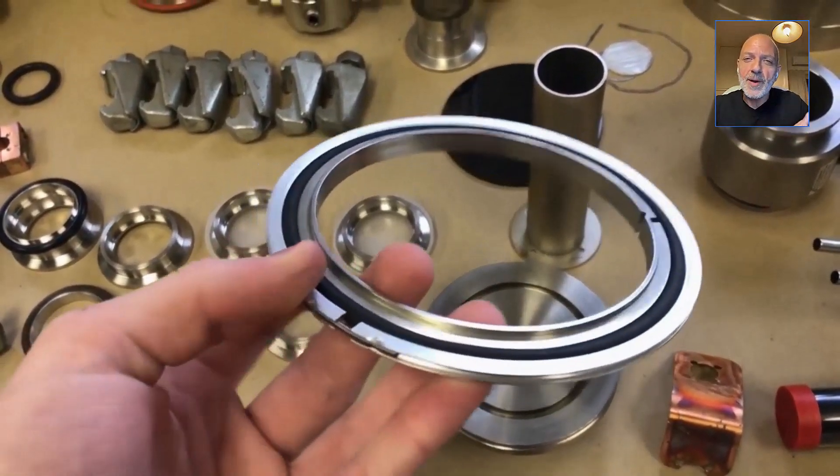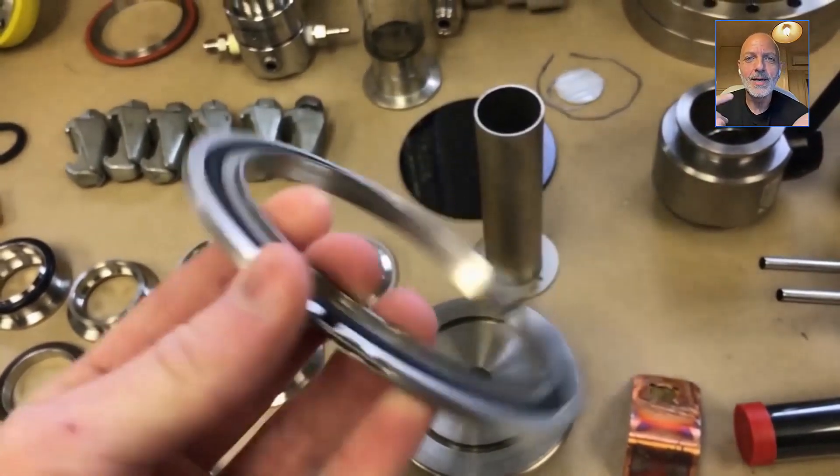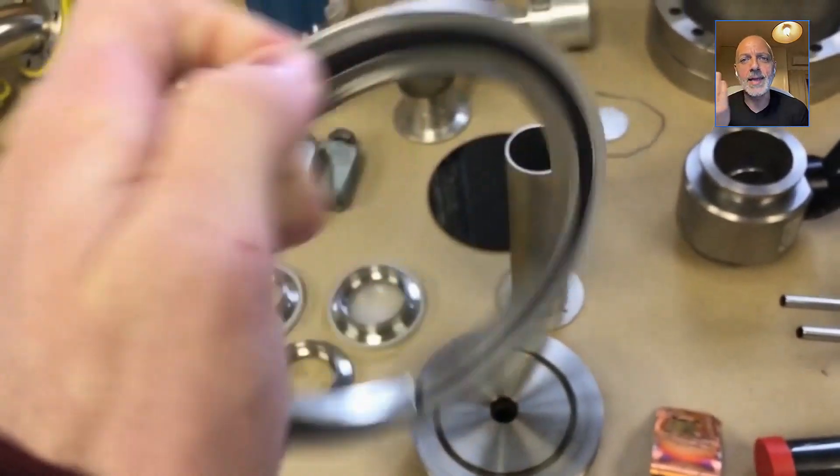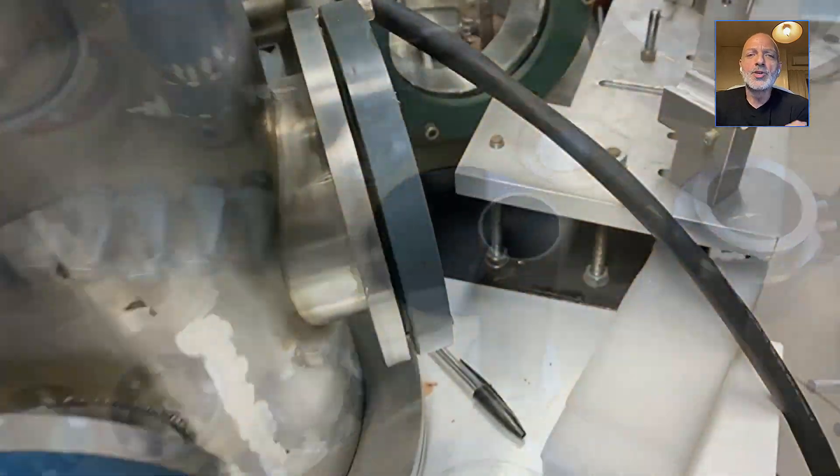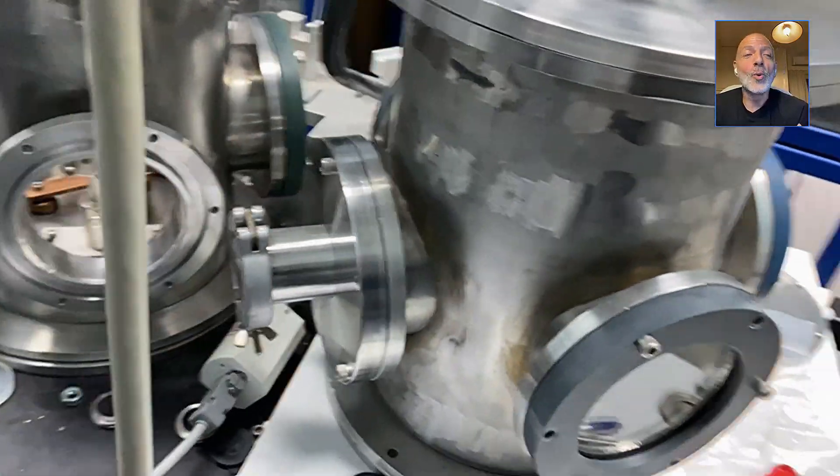10 to the minus 6, 10 to the minus 4, 10 to the minus 6, depending on the gasket. If it's high quality, you can get that down to the minus 6. So because our chamber was out of service for one year, we had to go through all the bloody gaskets.